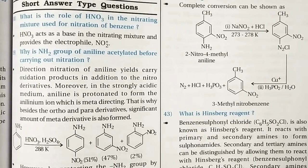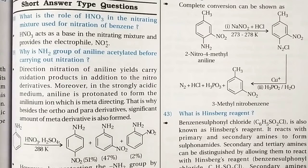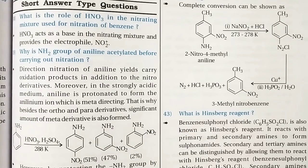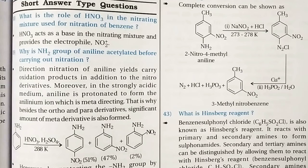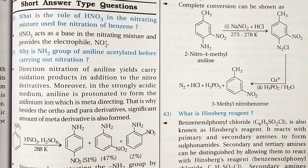Question 39: Why is the NH2 group of aniline acetylated before carrying out nitration? Due to the strong activating effect of the NH2 group, aromatic amines readily undergo electrophilic substitution reactions. It is difficult to stop the reaction at the mono-substituted stage — it usually gives 2,4,6-tri-substituted amines. For example, aniline with bromine water directly gives 2,4,6-tribromoaniline.